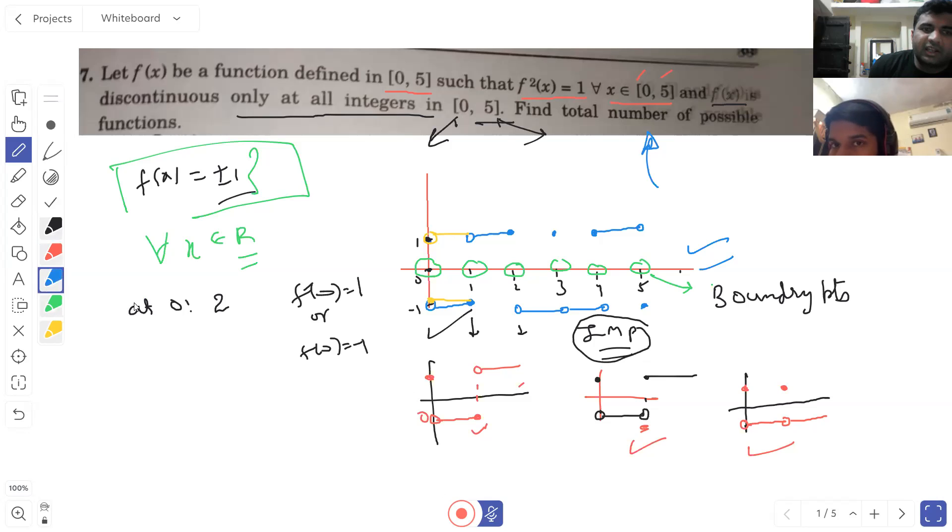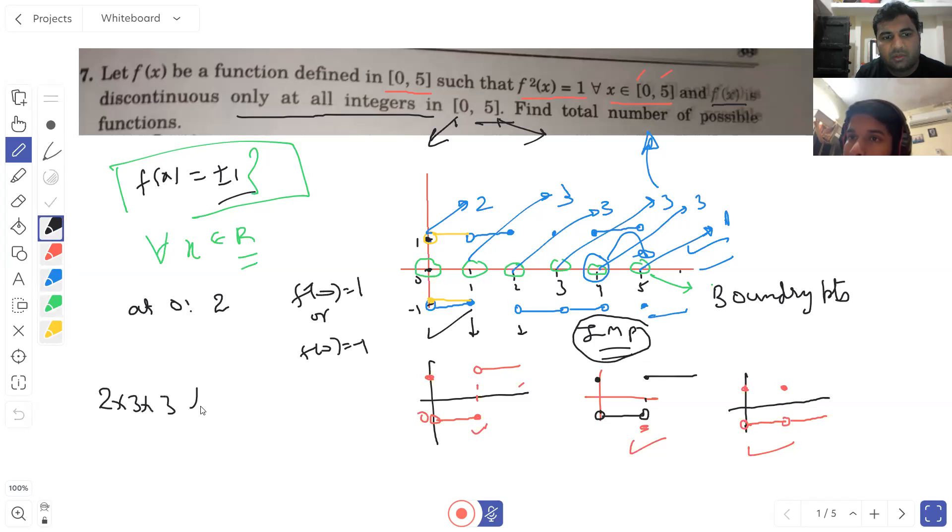I can claim this for every intermediate point. How many cases for zero? Two. For one? Two. For three? Two. For four? Two. For five? Two. Well, what are we talking about? How much is the number of ways? 3×3×3×3×3×1 which is 162.